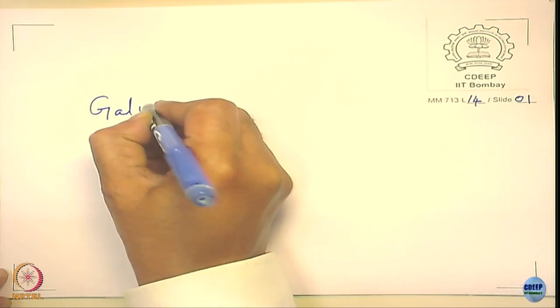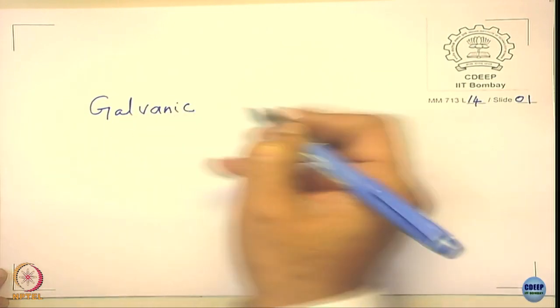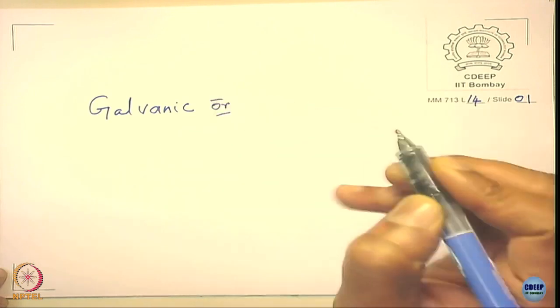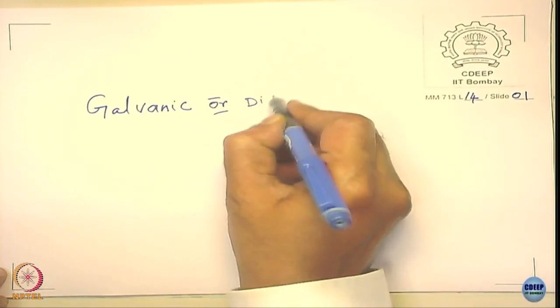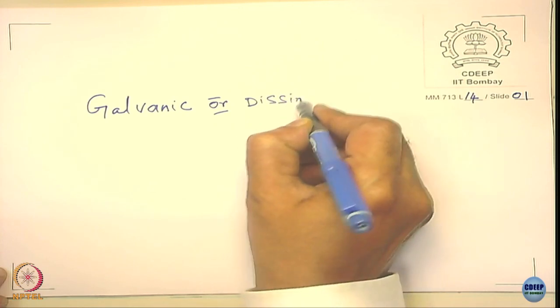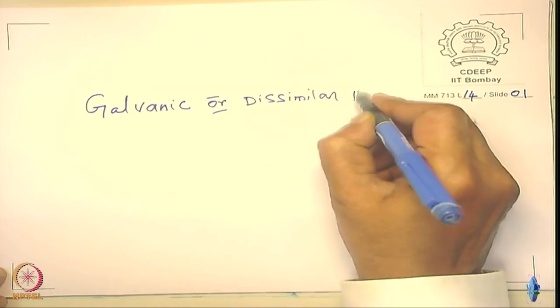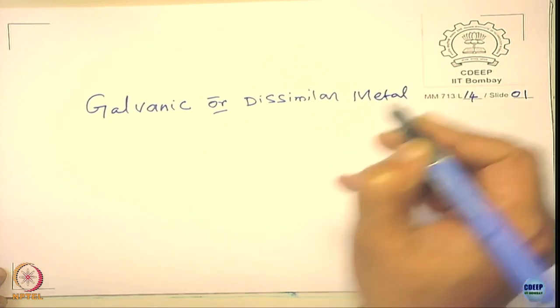Today we will be talking about an important aspect of corrosion called Galvanic Corrosion or Dissimilar Metal Corrosion.